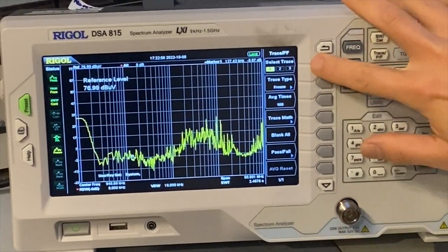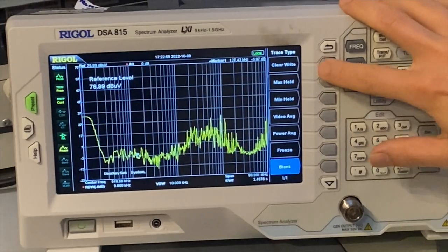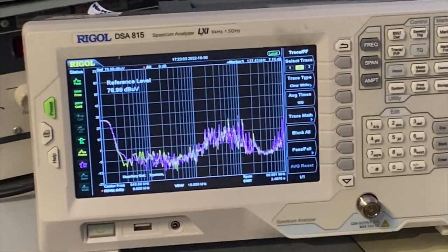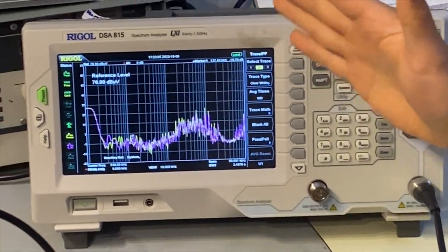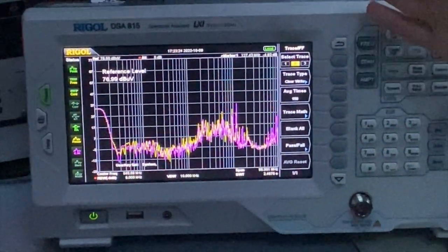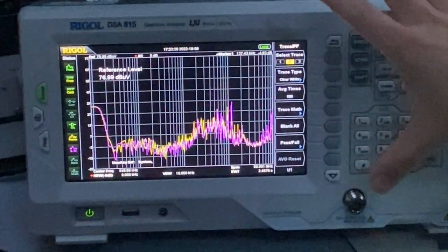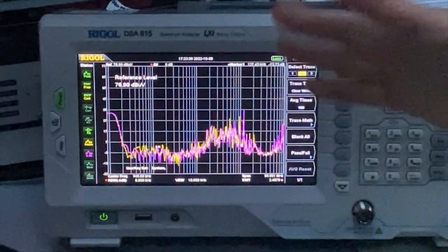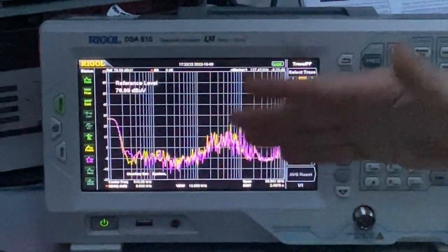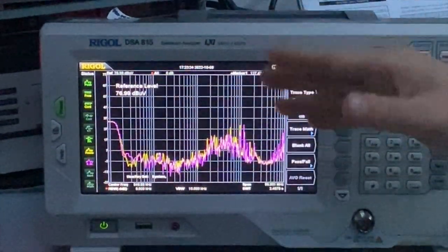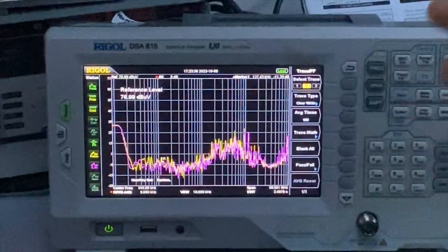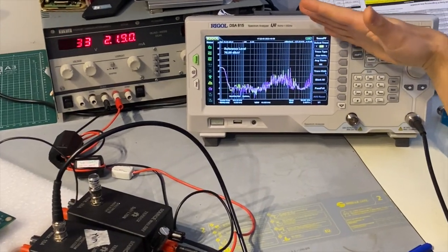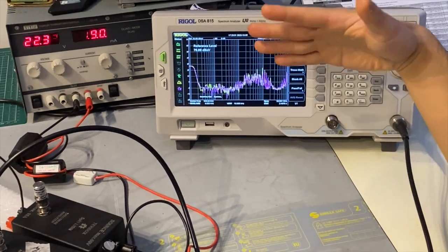And then we use another trace, trace 2, to see the impact of the LED lights. So I'm going to switch off the lights and see what happens. As you can see, now the lights are completely off. But the noise is more or less the same, which indicates the LED lights are good quality. They don't really radiate much. That's a good sign. So at least we can switch the lights back on again. So it is not the radiation from the LED lights.